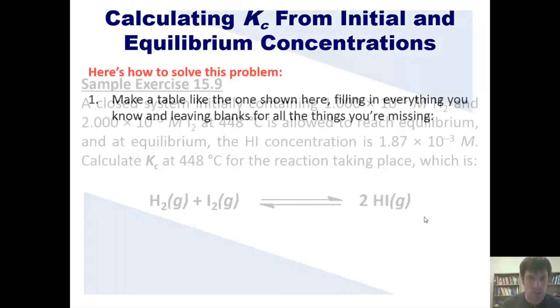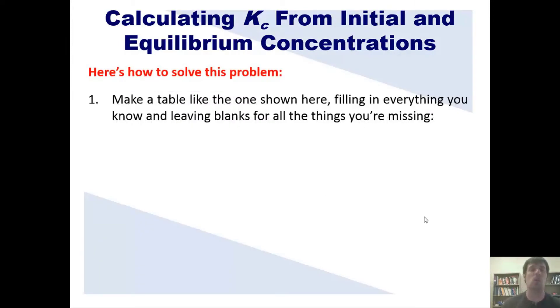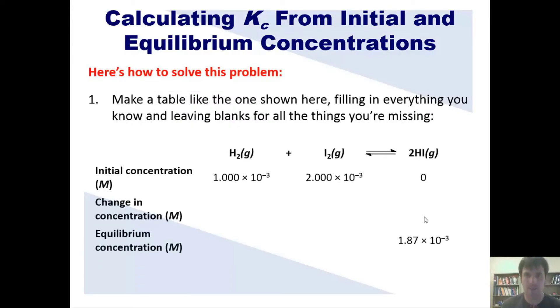Okay, so here's how we solve this kind of problem. First, we have to make a table like the one shown here, where we fill in everything we know and we leave blank everything that we're missing. For instance, in this problem, it tells us that the initial concentration of H2 gas is this number. The initial concentration of I2 gas is this number. And the initial concentration, okay, it doesn't tell us the initial concentration of product, but you should understand that at initiation, the concentration of product is zero, because nothing's been produced yet right at the start.